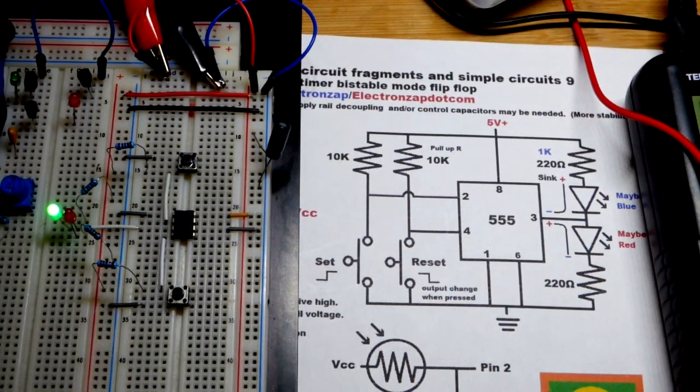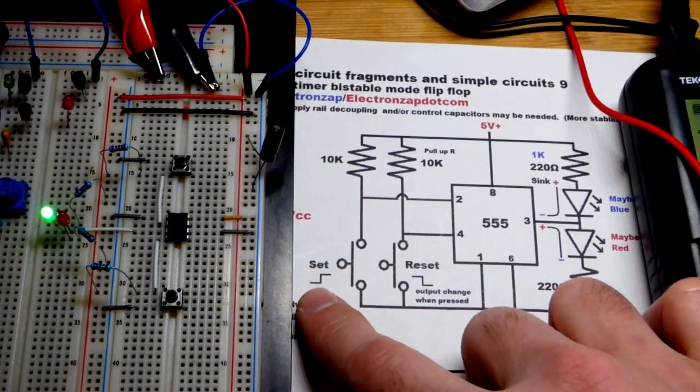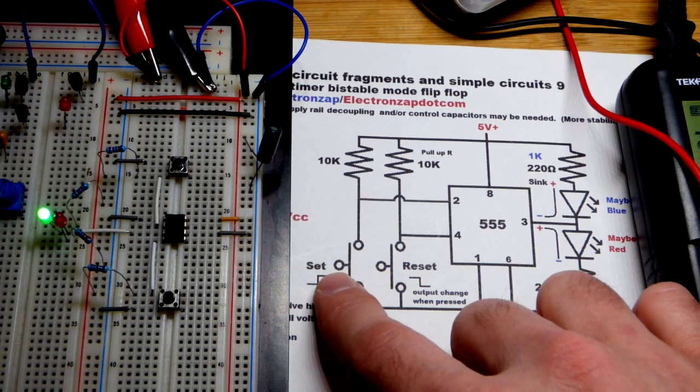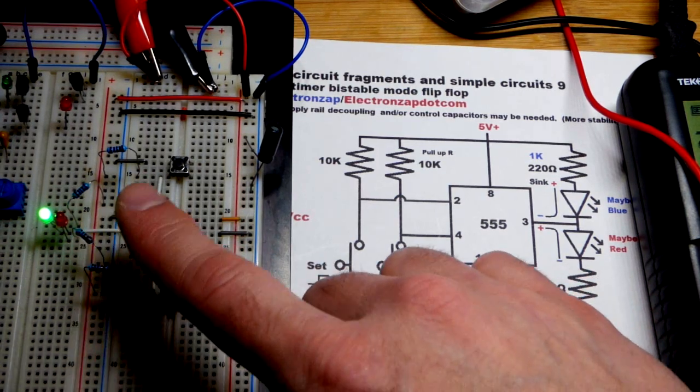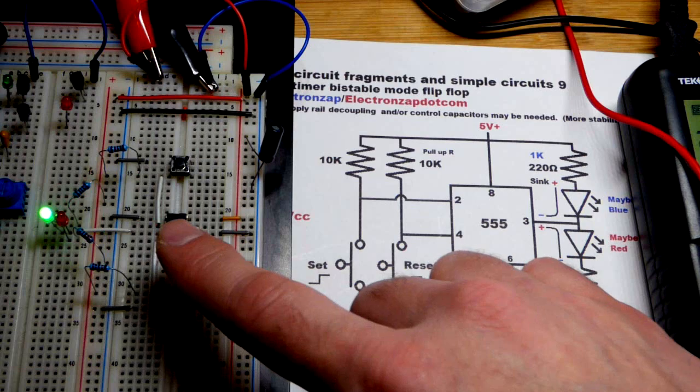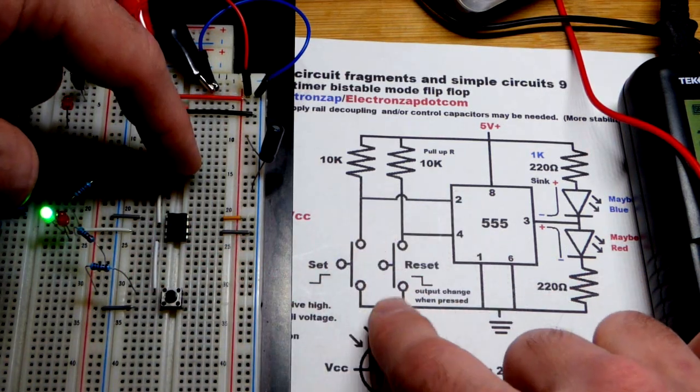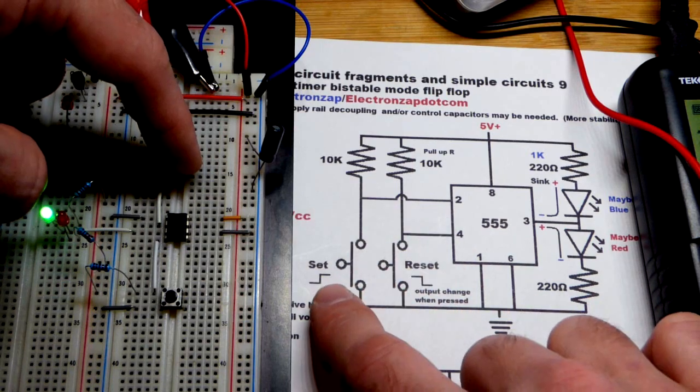But in any case, there you can see right now the output is low until we hit the button. And then the output will go high. Remember it's a low, because we got positive making our way towards negative. If you see the green LED. So pin number 2 there will get a direct connection to ground.